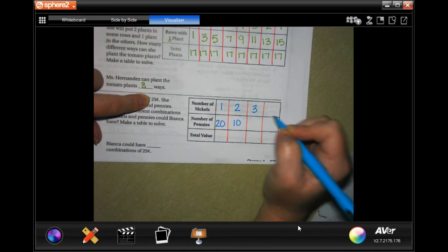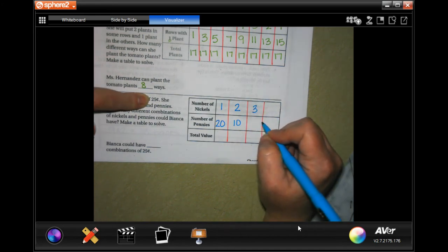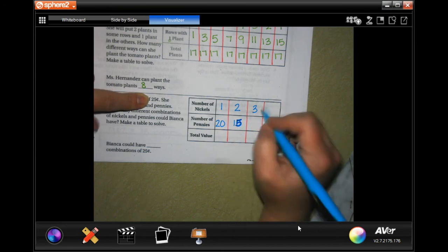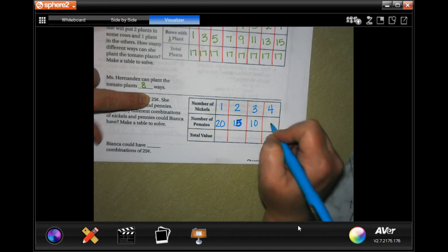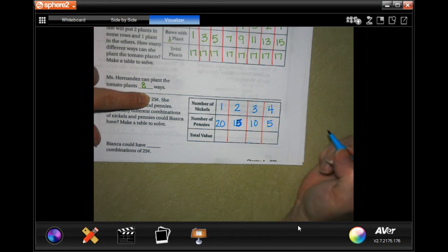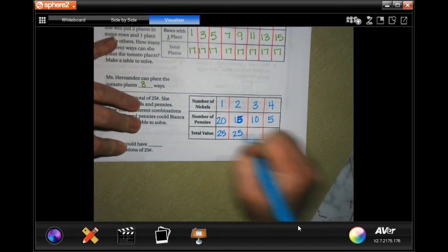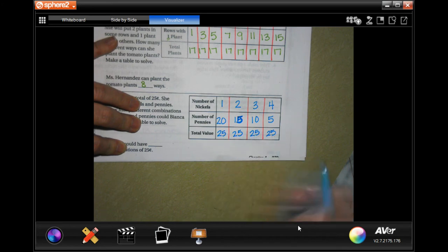She could have three nickels which is 15 cents. Oh sorry, plus 15, not 10. She could have three nickels which is 15 cents plus 10 pennies, and she could have four nickels which is 20 cents plus five pennies. Each time that's going to equal 25 cents. How many different ways can we do that? One, two, three, four. Four combinations to make 25 cents.